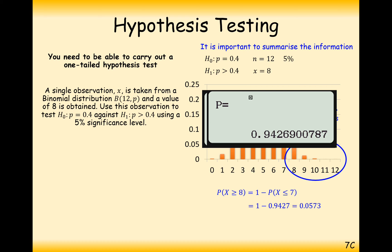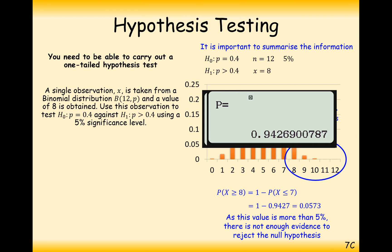There's enough random chance they scored 8 goals out of 12, so we can't assume the probability has changed. As this value is more than 5%, there is not enough evidence to reject the null hypothesis. There's still a 5.7% chance of scoring 8 or more goals at P = 0.4. Anything less than 5% means things have probably changed; more than 5% means things are probably as before.